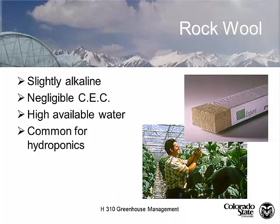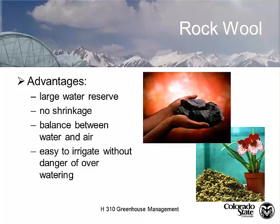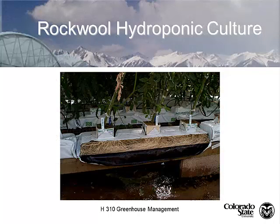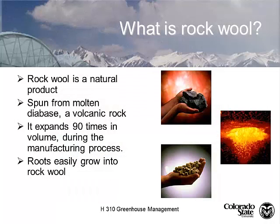Rockwool is a spun mineral product that is slightly alkaline. It has not much cation exchange capacity but a lot of water holding capacity. It's primarily used as a substrate for hydroponics — it has a large water reserve, doesn't shrink, has good air-water balance, and is easy to irrigate without overwatering, which is why hydroponic growers use it in recirculating systems. Here you can see a rockwool slab with happy, bright roots. It's from a volcanic rock, and roots grow easily into rockwool.